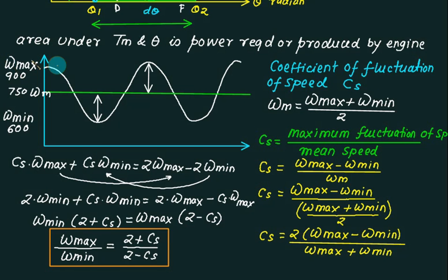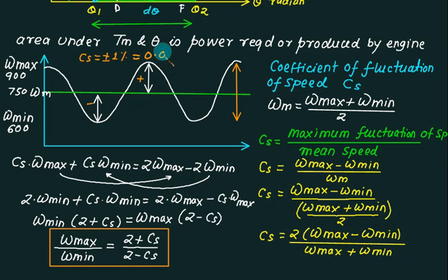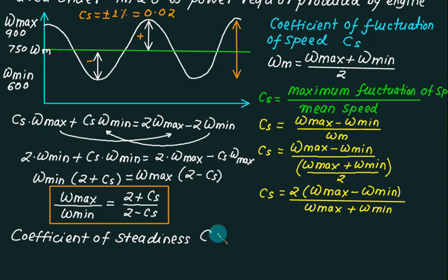Normally C_s is provided as a plus and minus percentage value. If C_s is given as ±1%, the total band is 2%, so you must take the numerical value as 0.02. The reciprocal of the coefficient of fluctuation of speed is called the coefficient of steadiness. The coefficient of steadiness is simply the reciprocal of C_s, so the relation is just reversed.